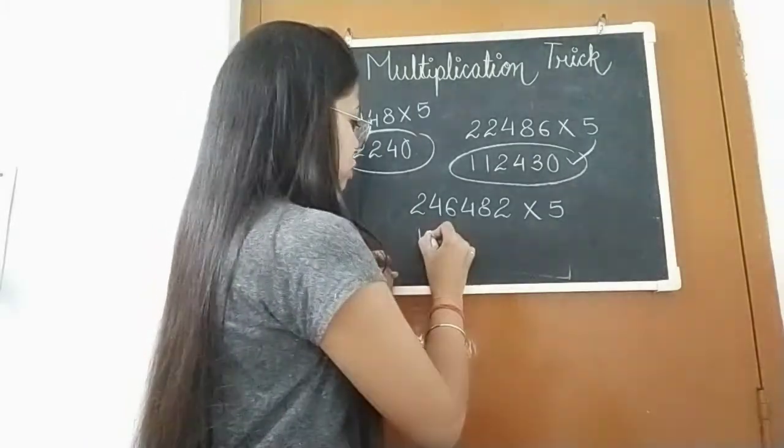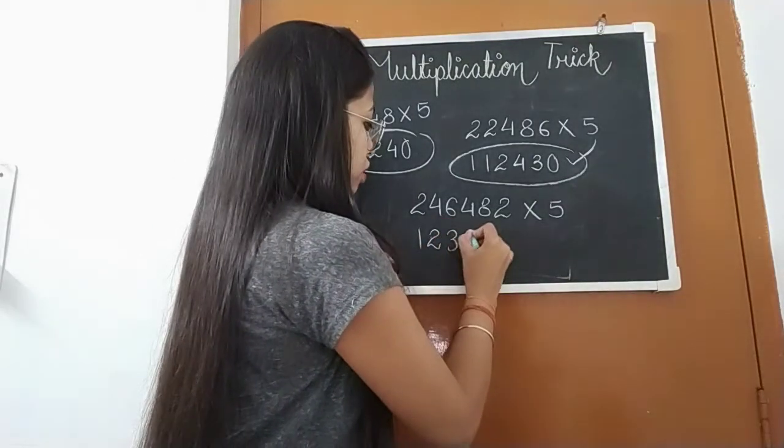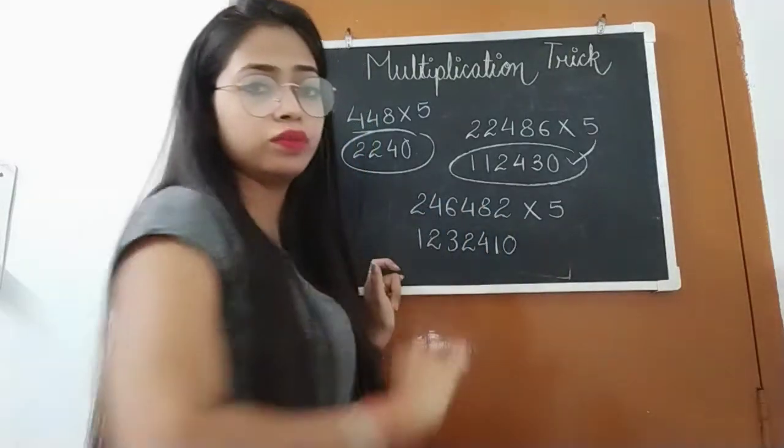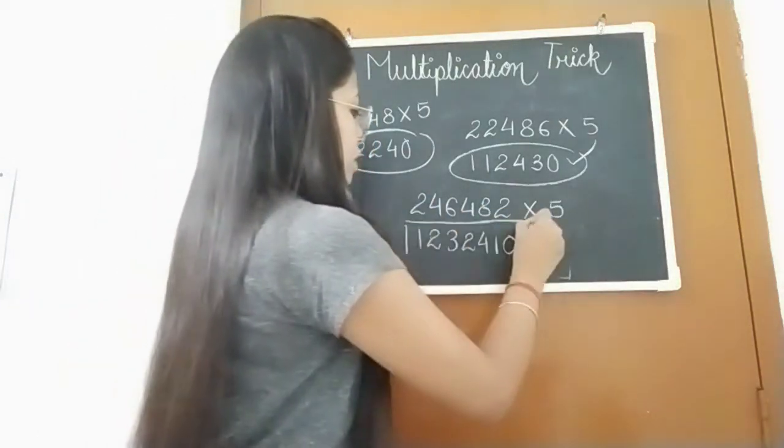Dividing by 2: 1, 2, 3, 2, 4, 1. And what will we add? 0. So this is our answer.